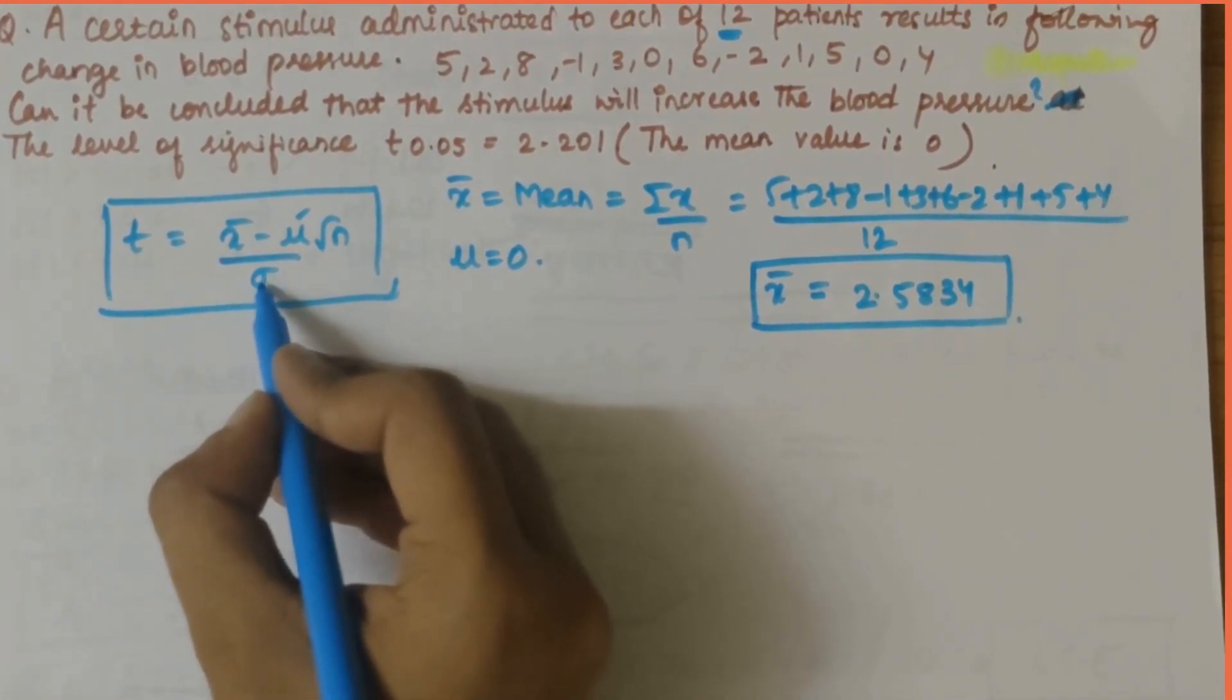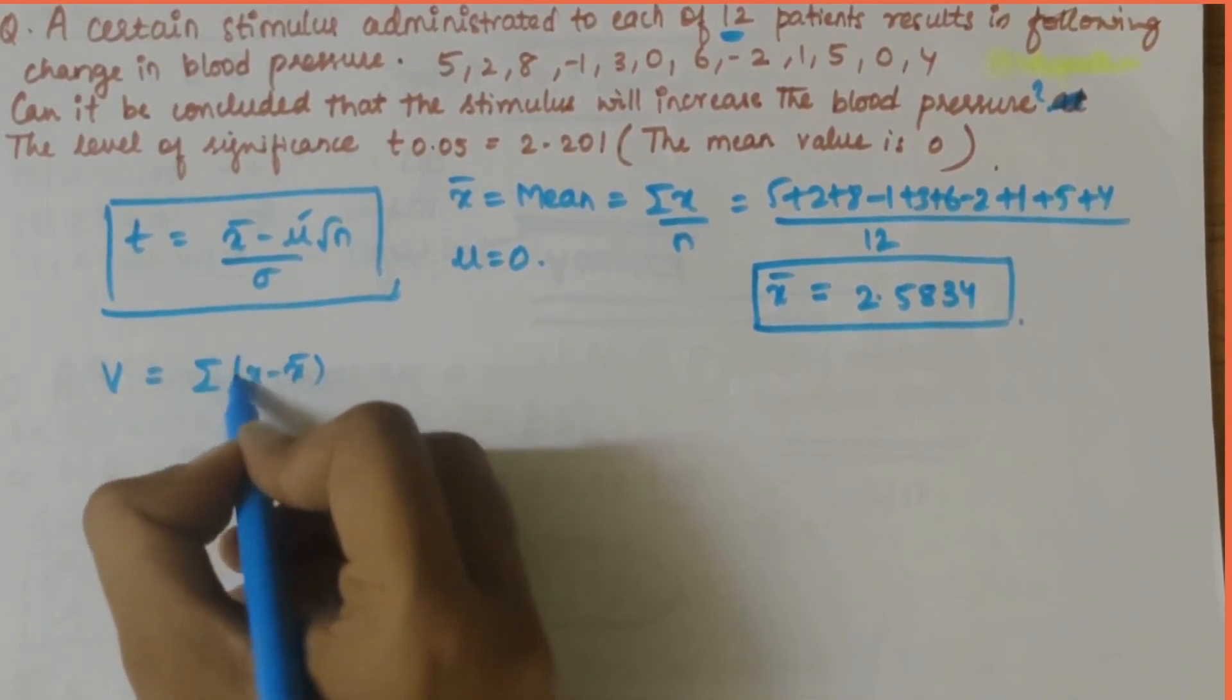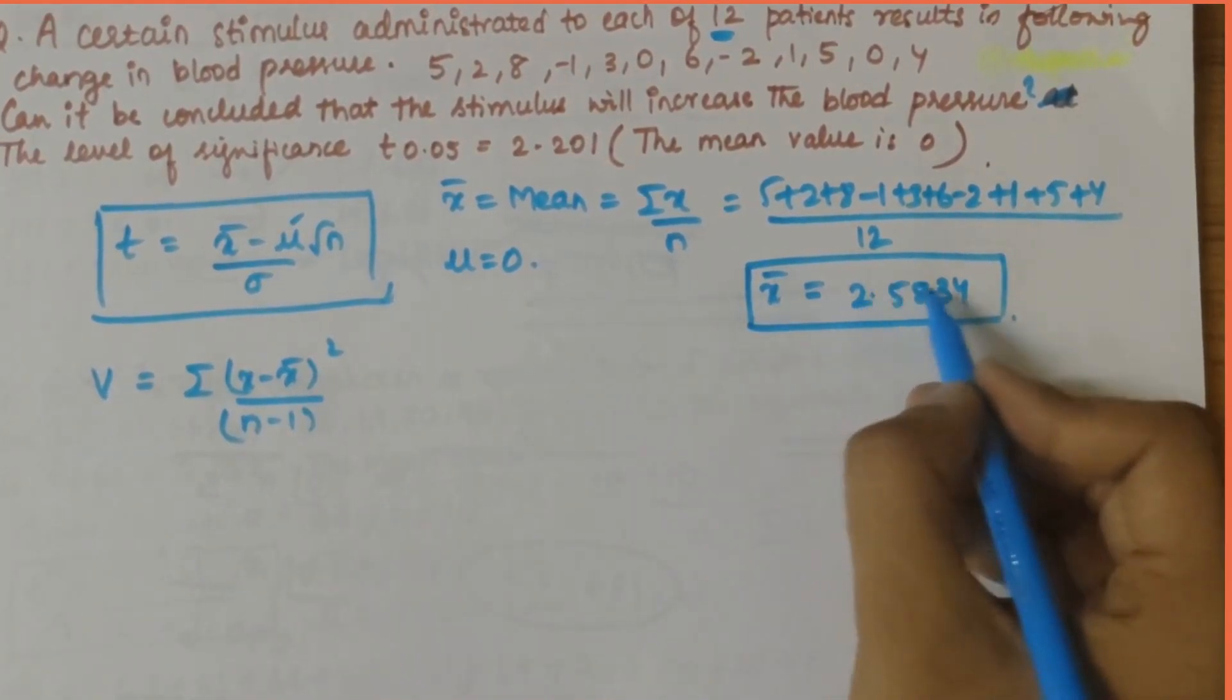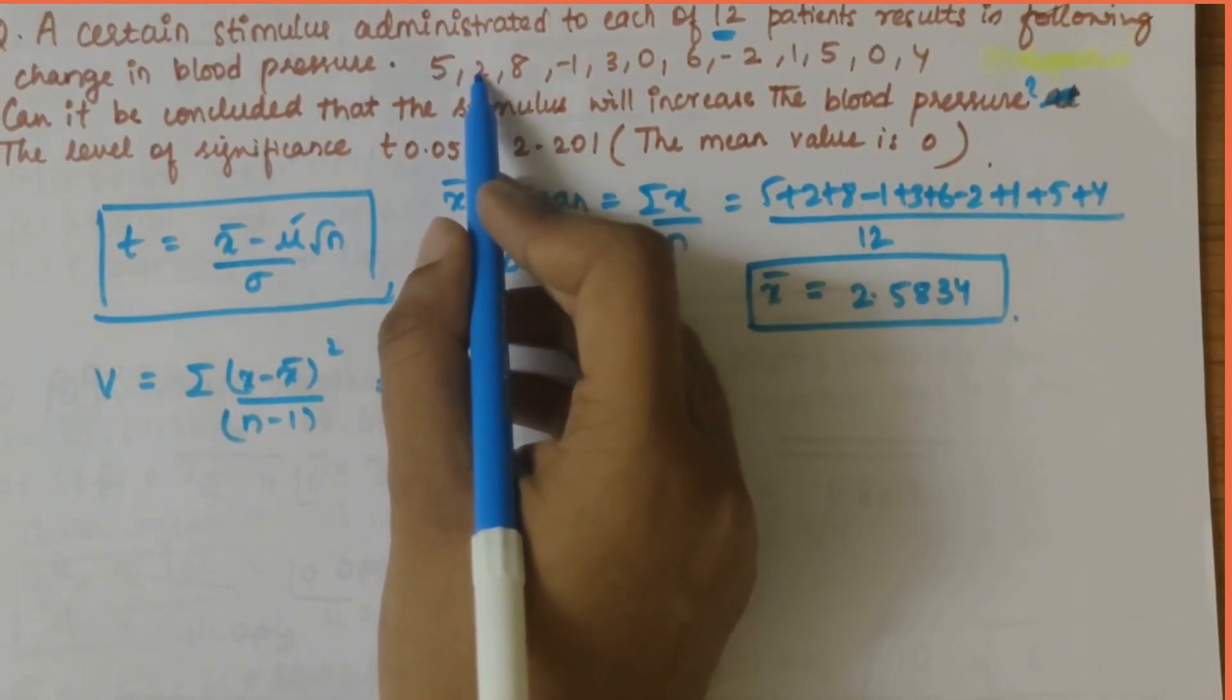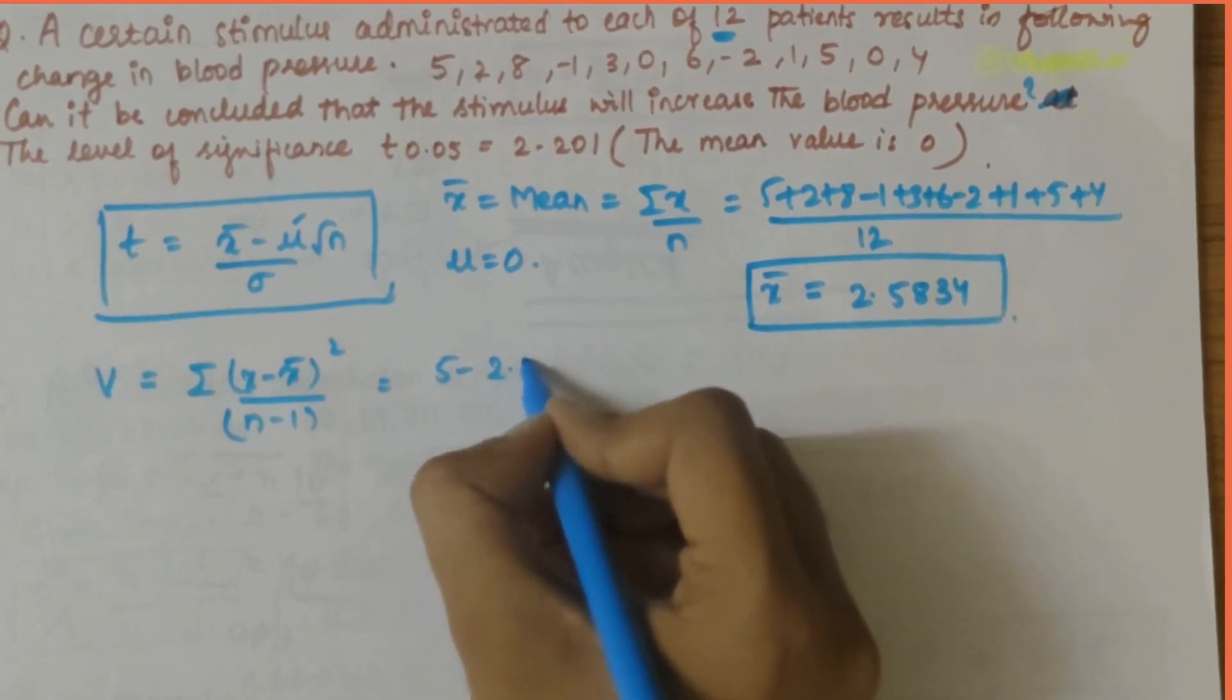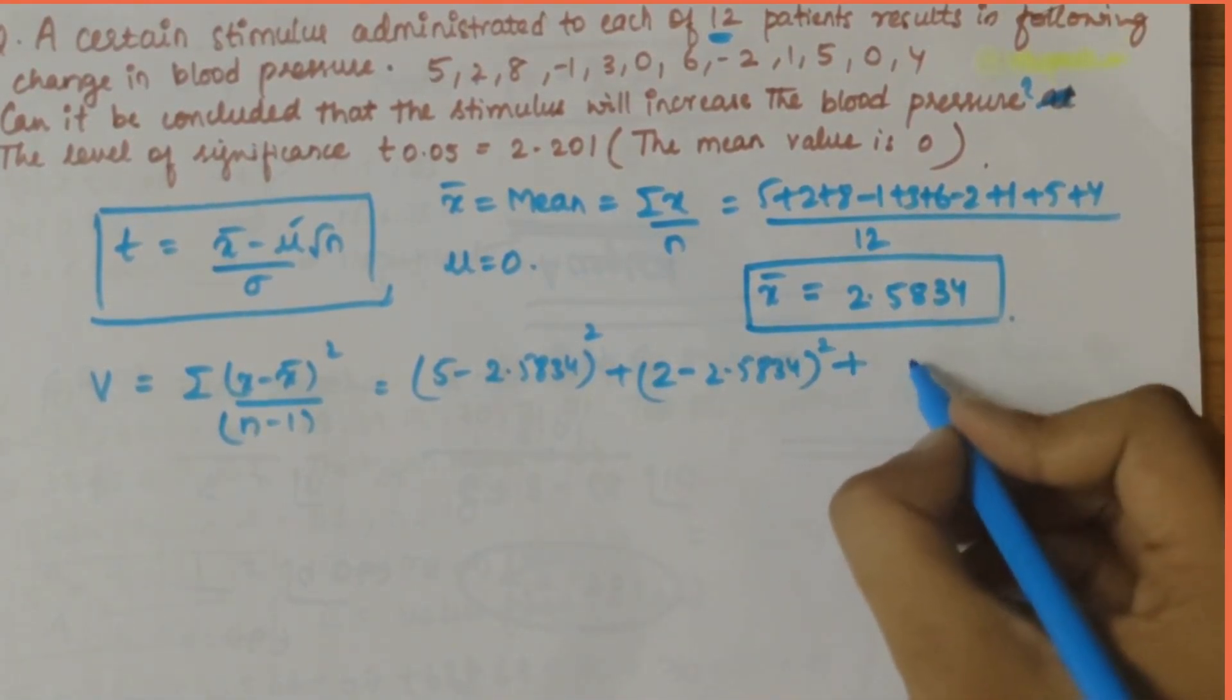Now let's calculate sigma, but before sigma we have to calculate variance first. So v is equal to summation x minus x bar whole square by n minus 1. X bar is 2.5834, so it will be 5 minus 2.5834 whole square plus 2 minus 2.5834 whole square plus 8 minus 2.5834 whole square.